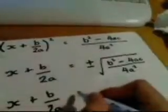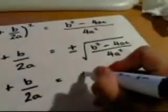Let's simplify this a little bit further. So the left-hand side remains as it is, x plus b over 2a. The right-hand side, well, the denominator here, which is 4a squared, the square root of that will simply be 2a. So we can rewrite this as plus or minus the square root of the numerator divided by 2a.